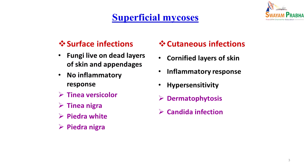The surface infections comprise mainly tinea versicolor, tinea nigra, white piedra, and black piedra, while the cutaneous infections are mainly dermatophytosis and candida infection. Now we will go into details of these, but before that we will see a few cases which might help you understand how we come across these patients and how we diagnose them.